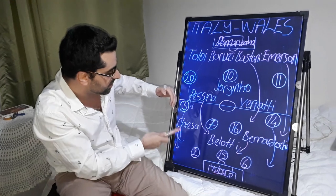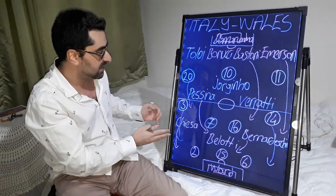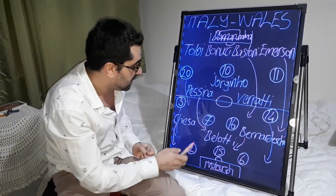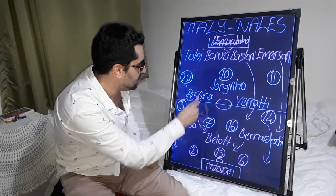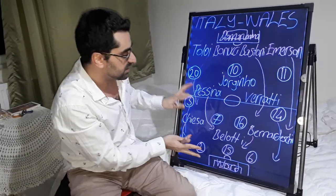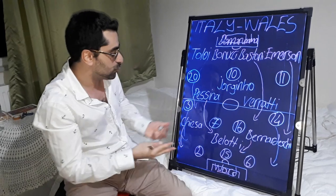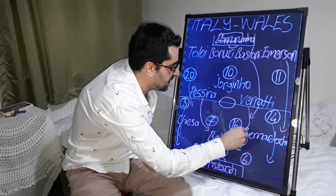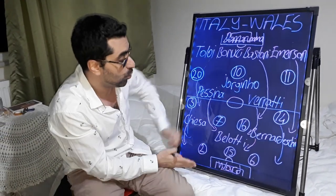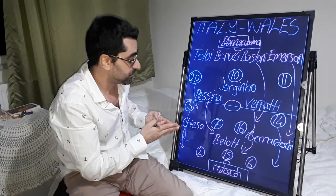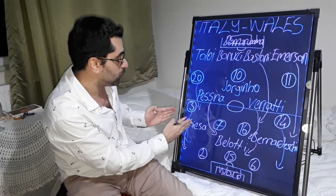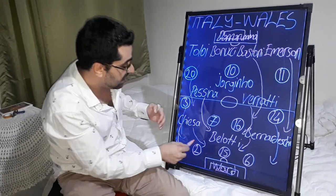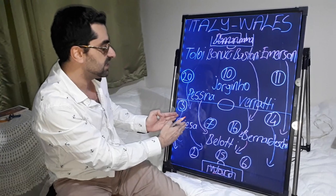Chiesa carried the ball well from the right wing and developed attacks for Italy. Every time, Bellotti, Bernardeschi, and Pessina got into the Wales box together, searching for goal positions. Verratti also supported the attacks. Sometimes Chiesa tucked infield and searched for goal positions together with Bernardeschi and Bellotti.